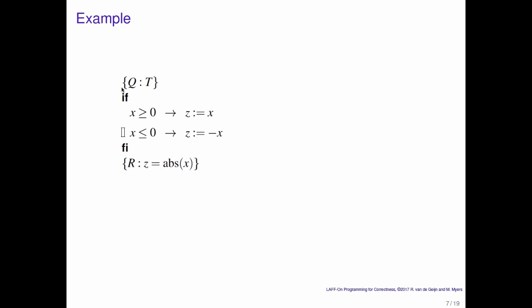So let's look at an example in how we may prove a code segment correct using this definition. So here we have a code segment that assigns to variable z the absolute value of x. What does that mean? Well, if x is greater than or equal to 0, then z is equal to x. If x is less than or equal to 0, then z is equal to minus x.